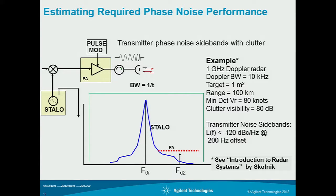It has a calculation for a one gigahertz Doppler radar with a bandwidth of 10 kilohertz. We assume a target surface area of one square meter and a minimum velocity. If you do all the math, what that translates to is minus 120 dBc per hertz at a 200 hertz offset.